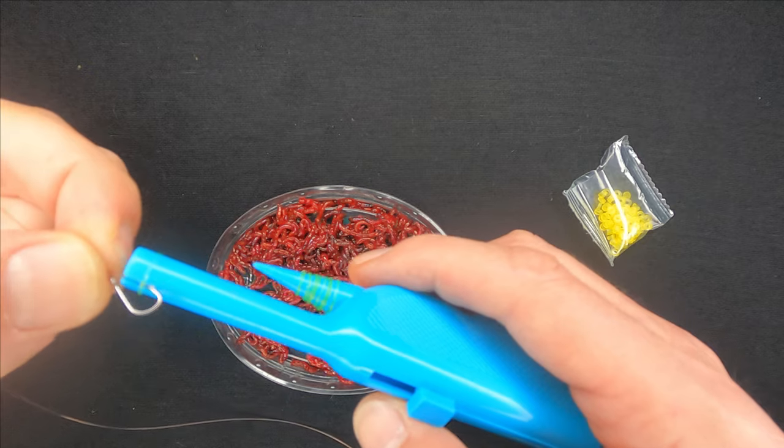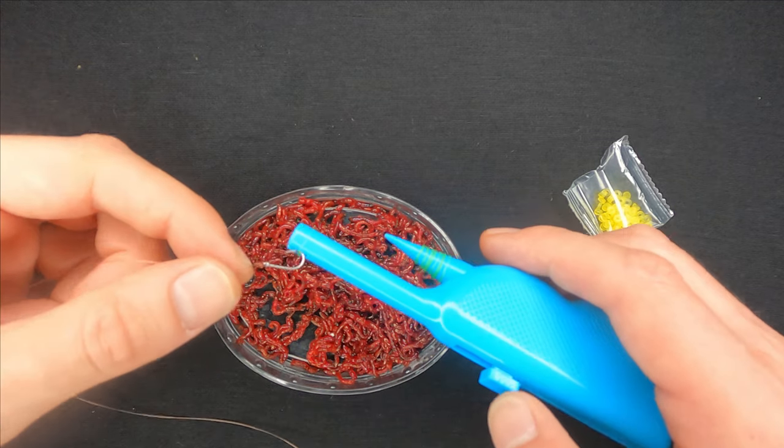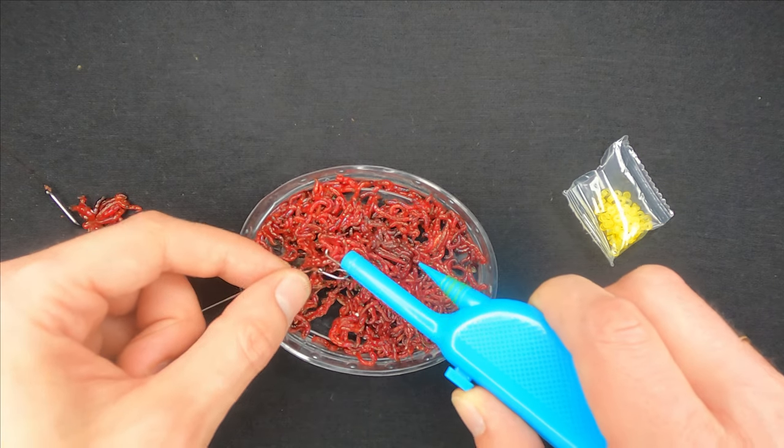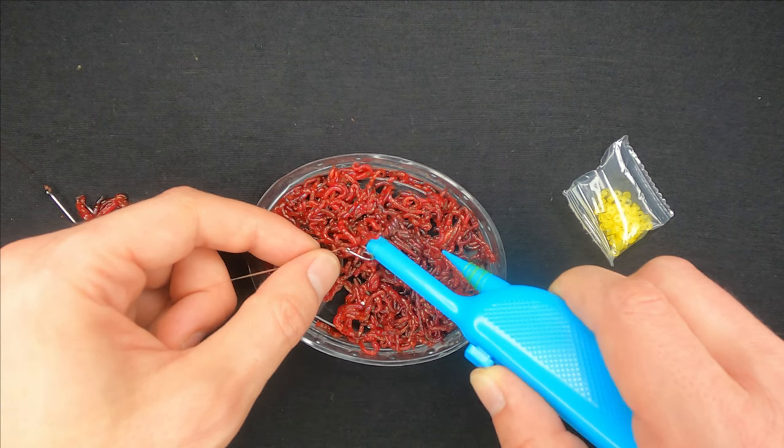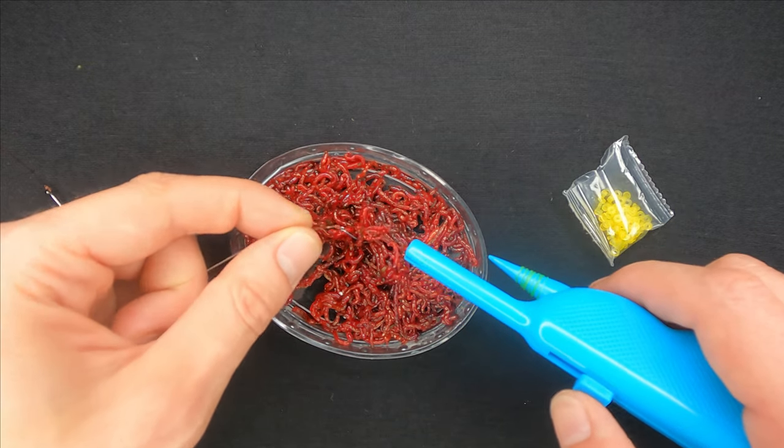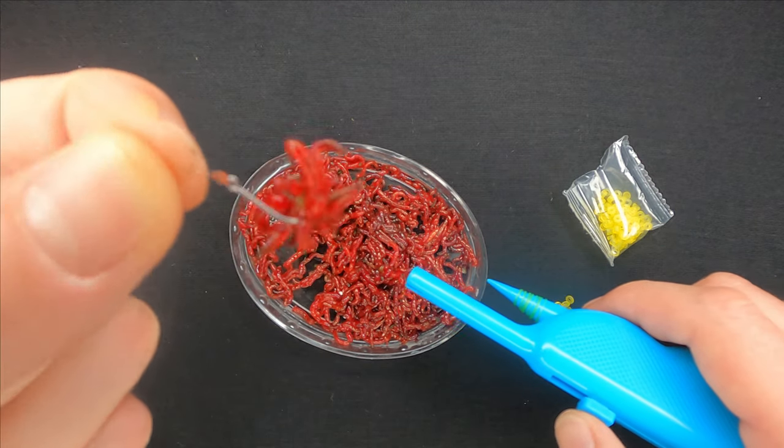put it under the rubber, push the handle, take as many bloodworms as you can and then just remove the hook from the tool.